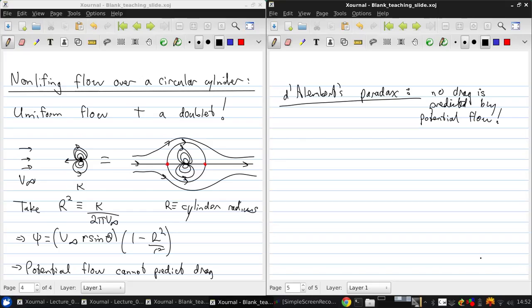As you can imagine, you could produce any combination of sources, sinks, or doublets with a uniform flow and create a body of any shape. But you won't be able to generate lift as a result of that, so we need something else in our toolbox to do that.